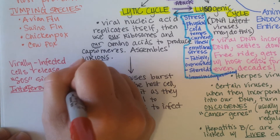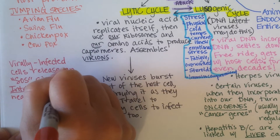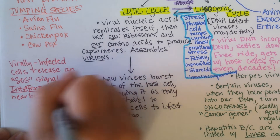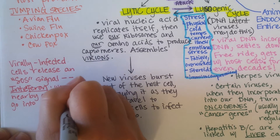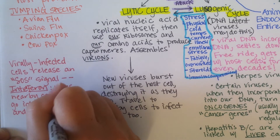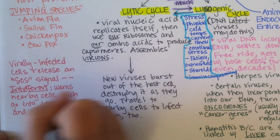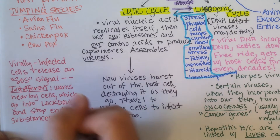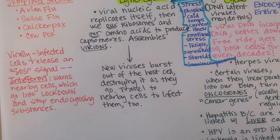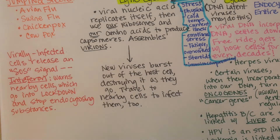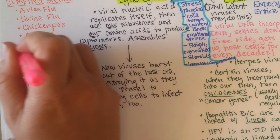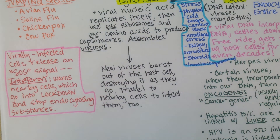Interferon basically warns nearby cells, which then go into lockdown and stop endocytosing substances, or severely limit it. So the host cells — say your respiratory cells — are going to stop endocytosing, which might also interfere with their normal function. But just like in a real lockdown, you stop all other activities to deal with the threat, and once the threat is dealt with you go back to normal. For the time being, the cell goes into lockdown so it doesn't accidentally endocytose a virus.